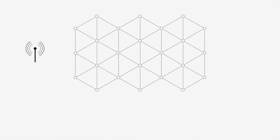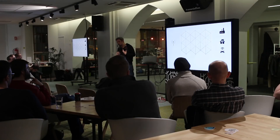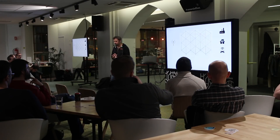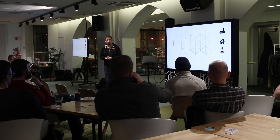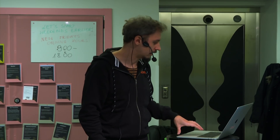Streamr is implemented as a decentralized peer-to-peer network for data delivery. A data source can connect to any node in the network, publish a new data point, and it instantly gets delivered to valid subscribers. The network is built to achieve scalability, so it scales horizontally up to potentially billions of events per second via a clever sharding scheme. This means that nodes in the network have asymmetric responsibilities for partitions in the data.